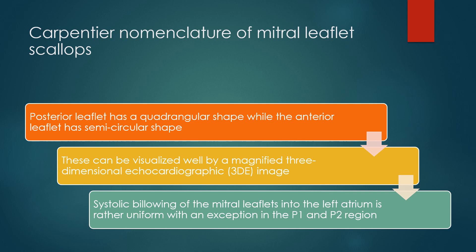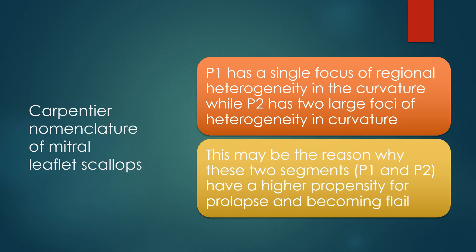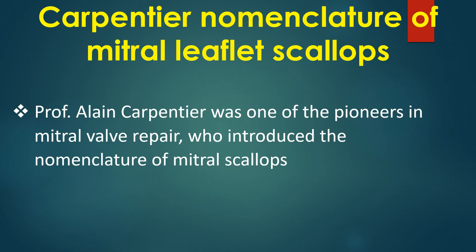Systolic bellowing of the mitral leaflets into the left atrium is rather uniform with an exception of the P1 and P2 region. P1 has a single focus of regional heterogeneity in curvature while P2 has two large foci of heterogeneity in curvature. This may be the reason why these two segments — P1 and P2 — have a higher propensity for prolapse and becoming flail. Professor Alain Carpentier was one of the pioneers in mitral valve repair who introduced this nomenclature.